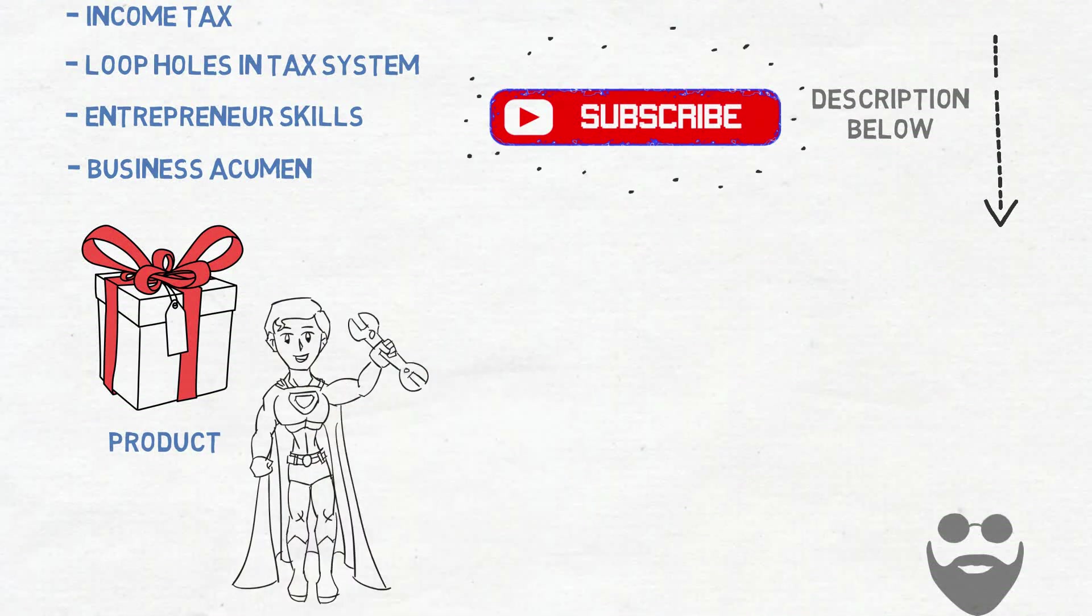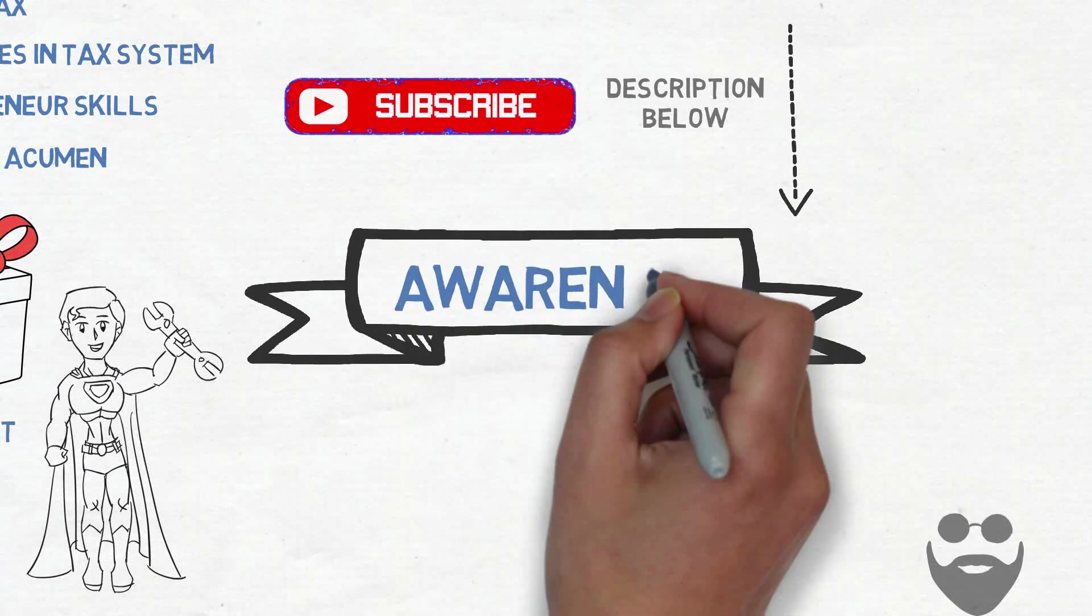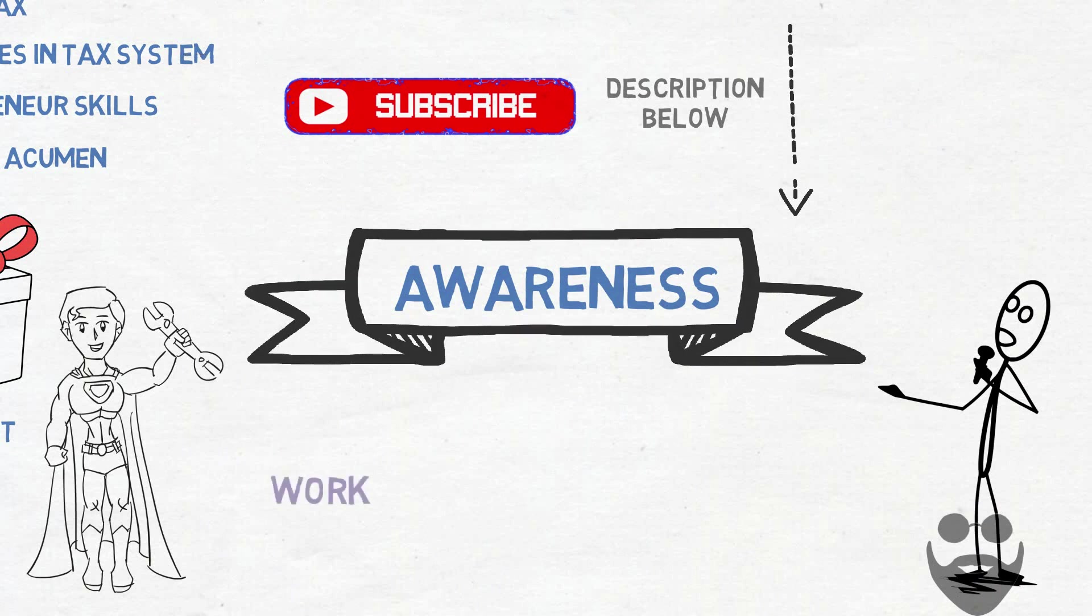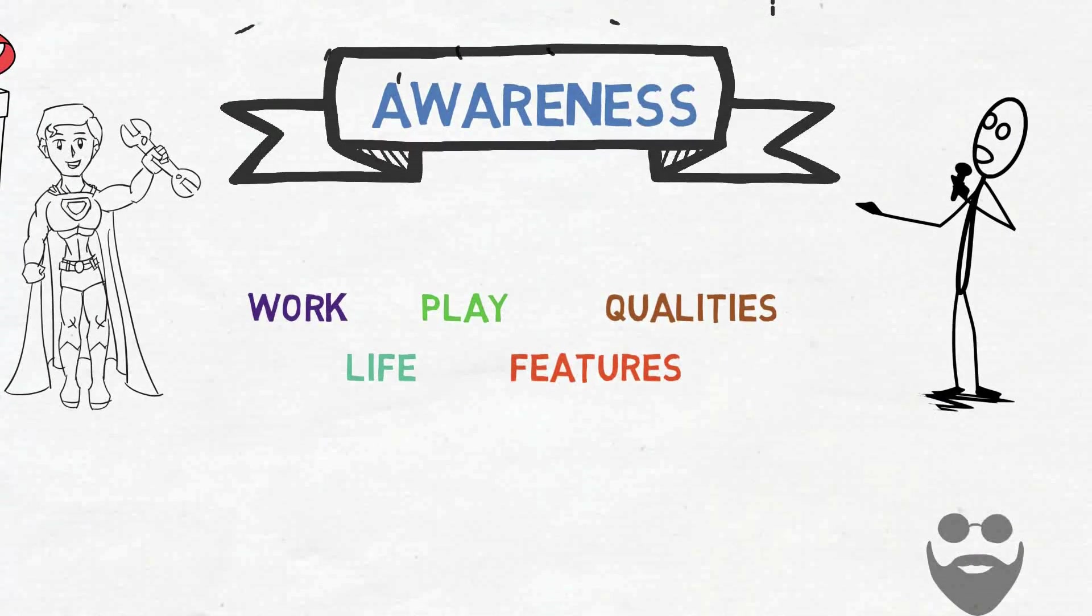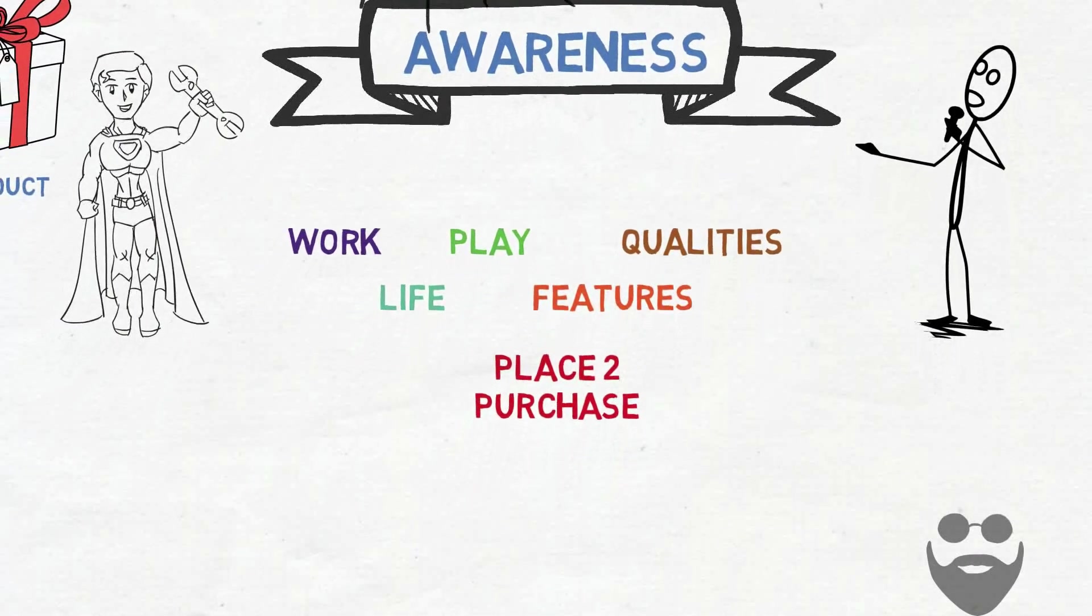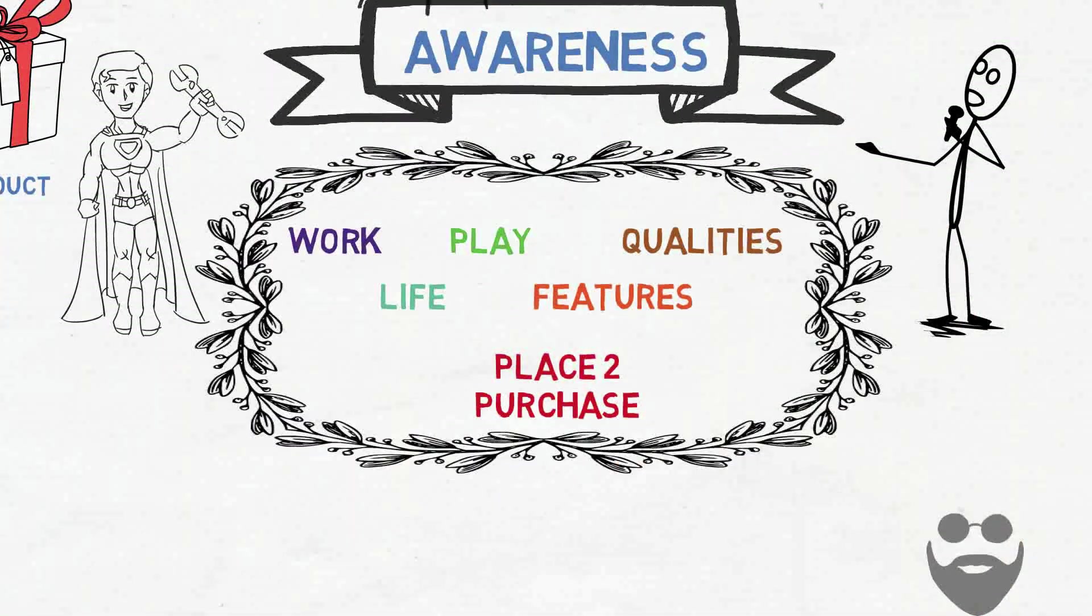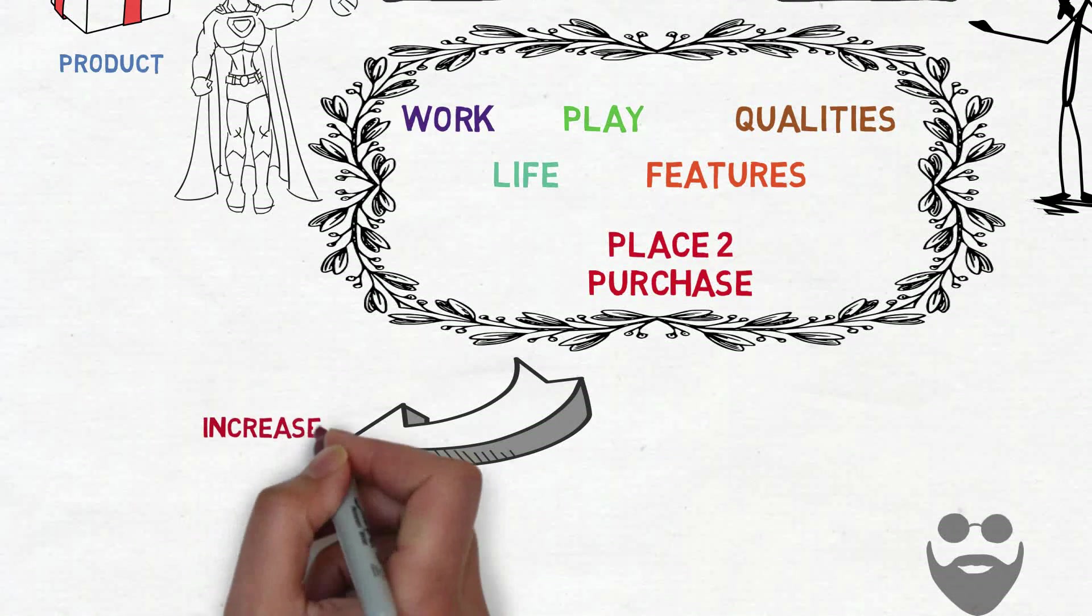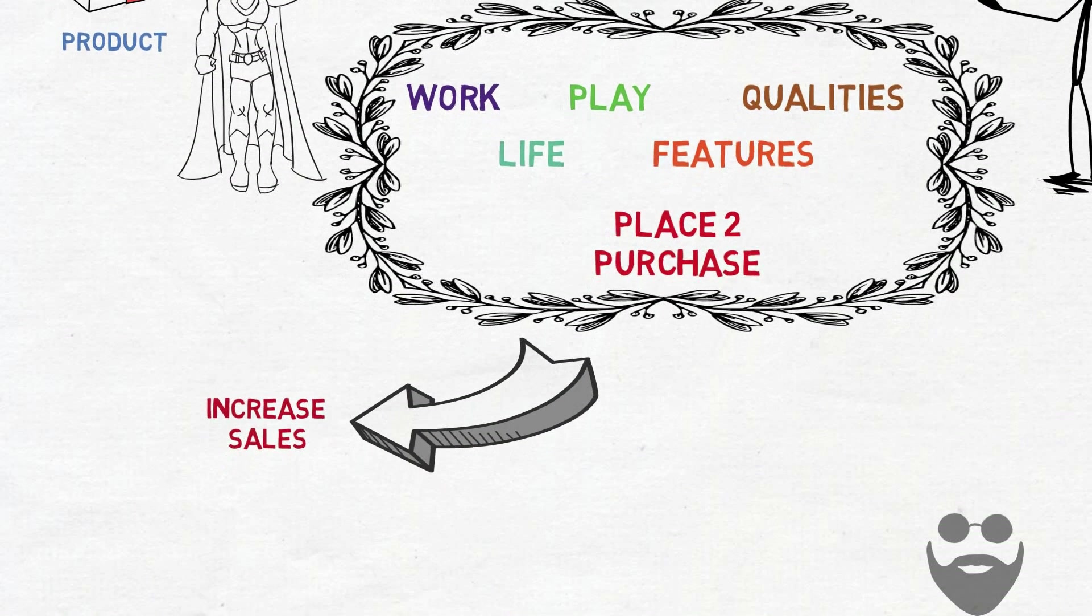Having a good product or service is not enough. A business needs to create public awareness about the product or service, about how it can improve your work, your life, your play, its features, its quality, and most importantly, where they can purchase it. This is where the marketing team comes into play. They create awareness and goodwill among the public. Later, the sales personnel capitalizes on the favorable environment that marketing efforts created.